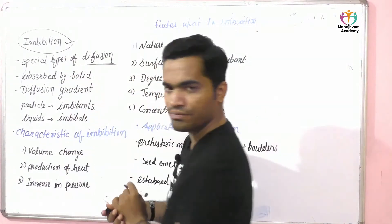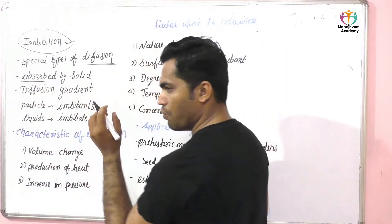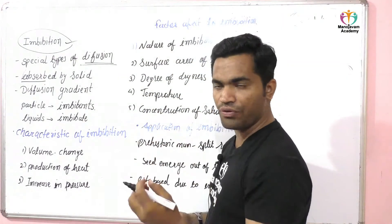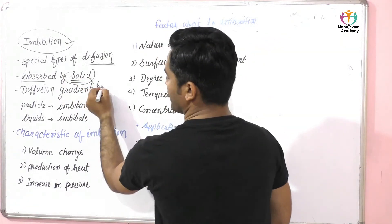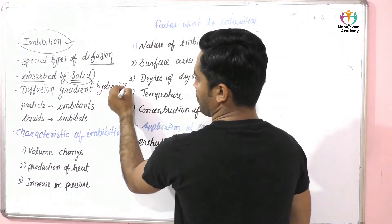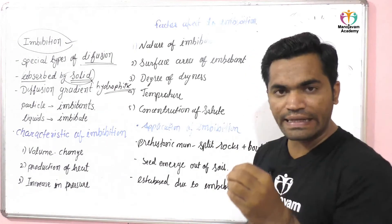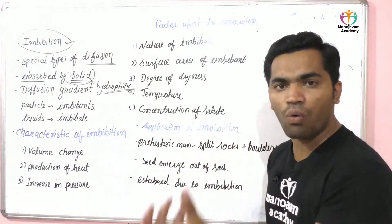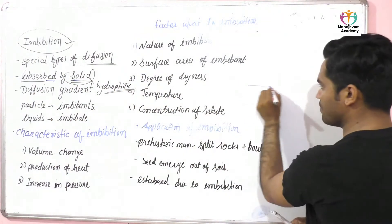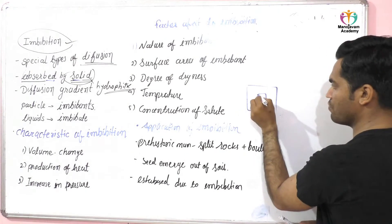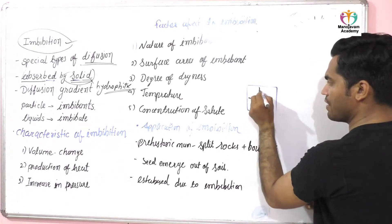The definition of imbibition is that it is a special type of diffusion in which water or some fluid is absorbed by a solid particle, and that solid particle is hydrophilic. Hydrophilic means that the particle has an affinity towards water, and that solid particle will absorb the water when put in a vessel.